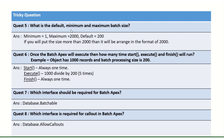What is the default, minimum, and maximum batch size? The minimum is 1, the maximum is 2000, and the default is 200. If you put 5000 as the size, Salesforce will automatically create chunks of 2000, 2000, and the remaining 1000 — so three batches will run in total.